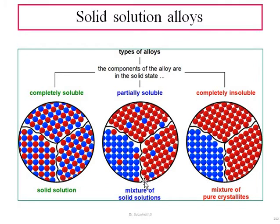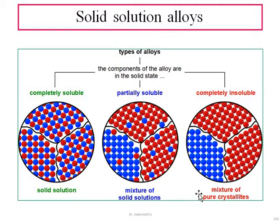It is very difficult to differentiate this under a microscope. The second case is a mixture — some diffusion has happened in certain areas, meaning it is partially soluble. The third case is completely insoluble — not a single atom has crossed the grain boundary. Each element stays in its own particular region, forming a mixture of pure crystals. This kind of alloy will be subjected to many damages or defects.